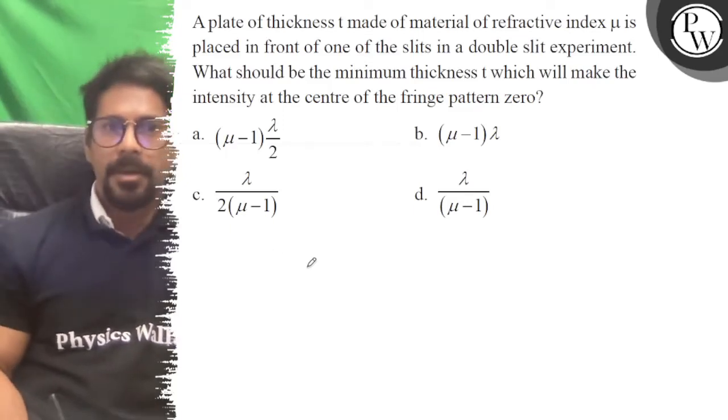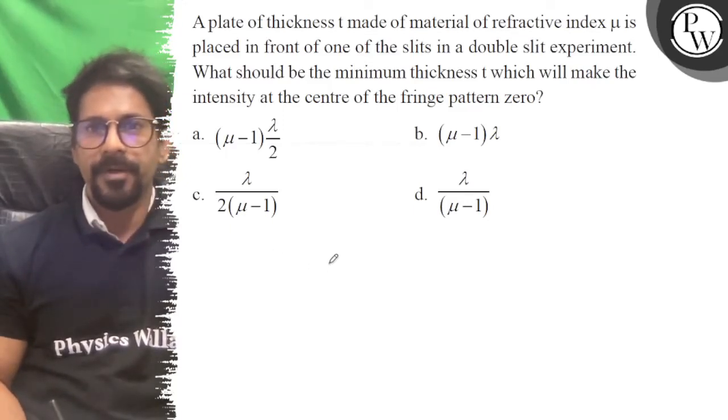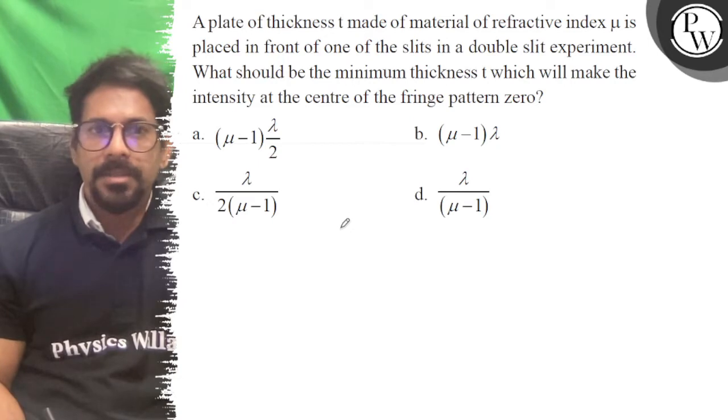Hello, let's see the question. A plate of thickness t made of a material of refractive index μ is placed in front of one of the slits in a double slit experiment. What should be the minimum thickness t which will make the intensity at the center of the fringe pattern zero?